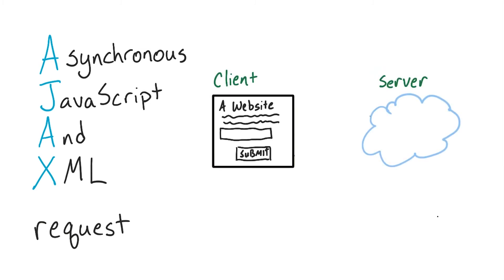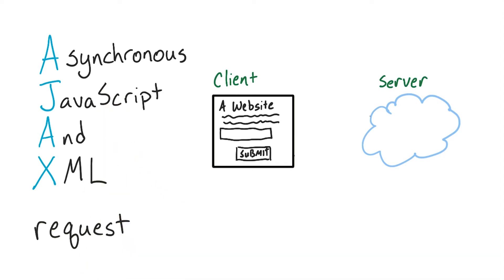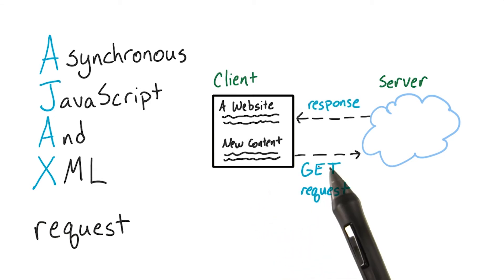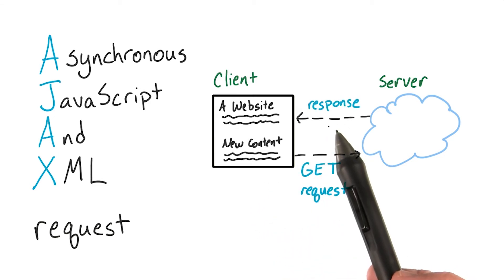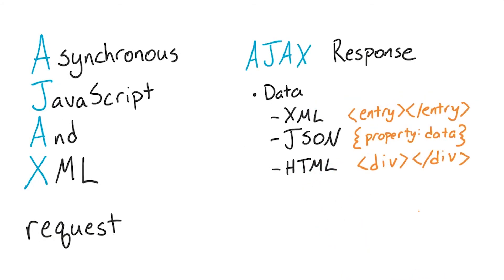Ajax requests allow for content retrieval and display without reloading the web page. Asynchronous in Ajax refers to the fact that the request doesn't block other events from happening. Instead, the page keeps on doing its thing and then only acts on the data when it gets returned by the server. Ajax requests occur in a number of different ways and with varying levels of difficulty.